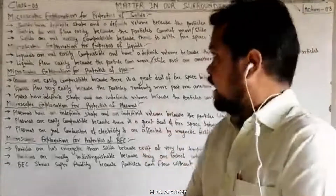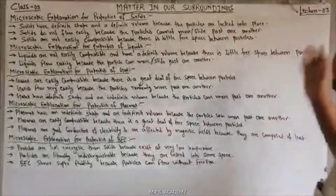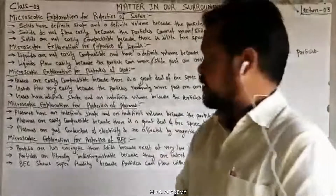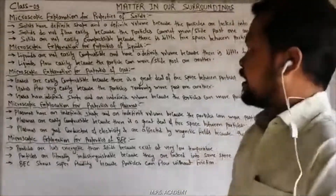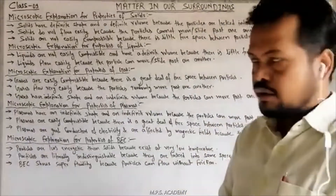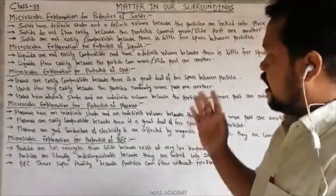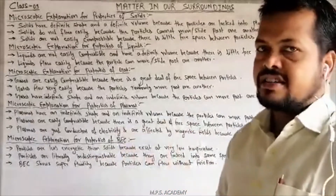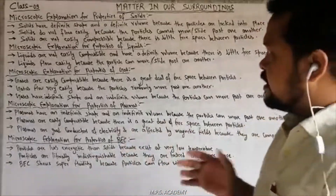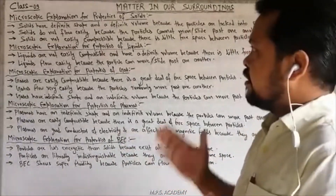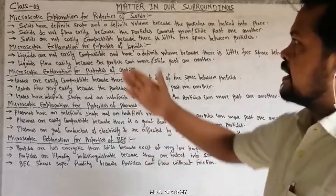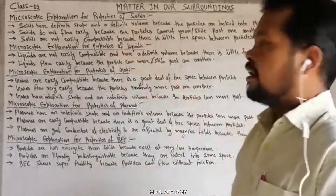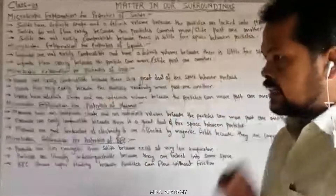Hello friends, this is the third lecture of 'Matter in Our Surroundings'. Today we explain about the microscopic explanation of various types of states. First of all, we describe the microscopic explanation for properties of solids.